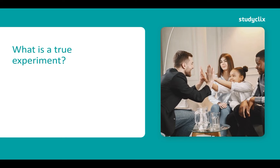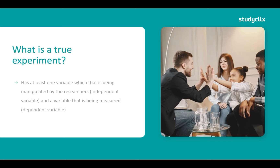So to start off, what is a true experiment? These have at least one variable that is being manipulated by the researchers — the independent variable — and a variable that is being measured — the dependent variable.